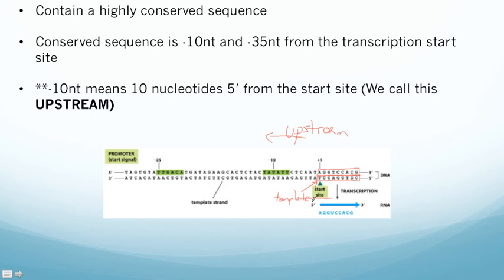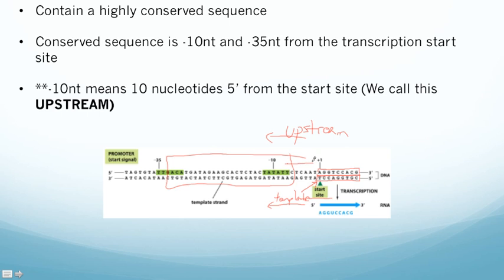Upstream would be in the 5' direction of the mRNA that you're making. Promoters are highly conserved sequences, and there are a variety of different types, so it's hard to generalize them. But they typically have conserved sequences upstream of the transcriptional start site, and these conserved sequences are what tells the RNA polymerase to bind to this region of DNA and begin transcribing RNA in a specific direction.